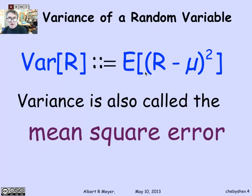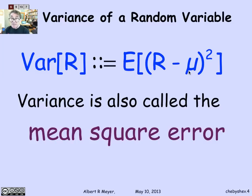The variance of r is also called the mean square error. If you think of (r minus mu) as the error that r is making — how much it differs from what it ought to be — and we square it and then take the average, we're taking the mean of the squared errors.